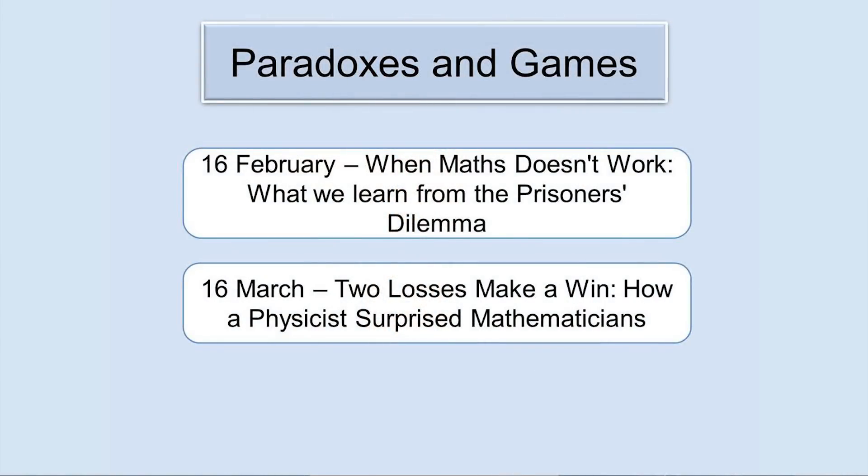Good evening and welcome to Gresham College, and welcome in particular to the people downstairs. This is the second of my three lectures this term on paradoxes in mathematics and computing. In March, I'll be talking about a recently discovered paradox about mathematical games discovered by a quantum physicist. But this month my lecture is about another mathematical paradox called the Prisoner's Dilemma, which at one time presented a serious problem for the relatively new mathematical subject of game theory, and how computers have helped develop our understanding so that instead of being an embarrassment, this example is now at the core of our research into fundamental aspects of human life like cooperation, reputation, and trust.